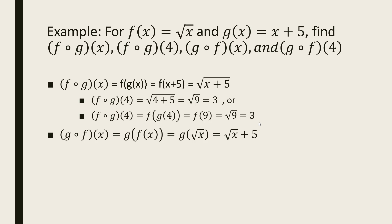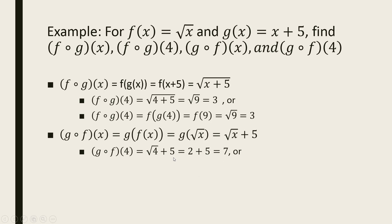We can work this backwards by switching the order of the machines — first x goes into f, then that f(x) value goes into g. Since f(x) is the square root of x, we're finding g of the square root of x. g(x) is x plus 5, but instead of x we plug in square root of x, giving us square root of x plus 5. Plugging in 4: square root of 4 is 2, and 2 plus 5 is 7. So g(f(4)) equals 7.